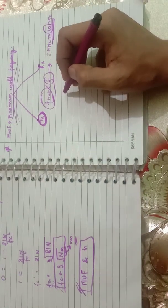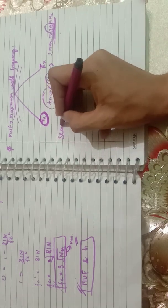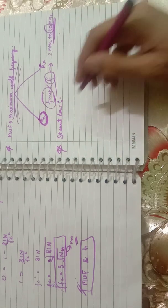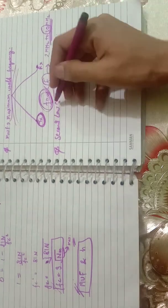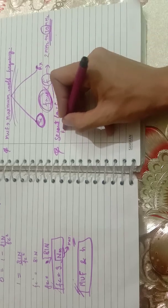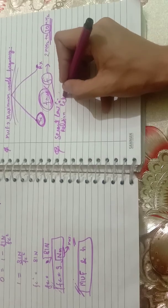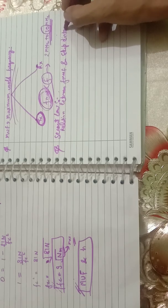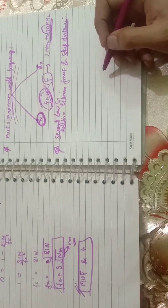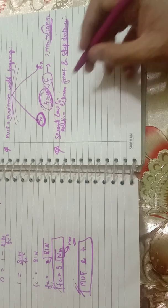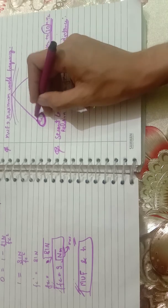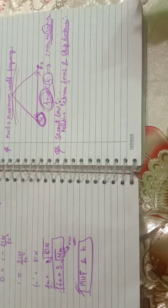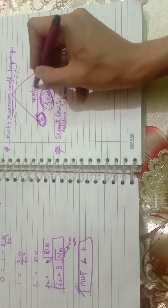Now that we have discussed MUF, we need to understand the second law and later the skip distance and the fMUF derivation. The second law establishes the relation between fMUF, or the maximum frequency, and skip distance. Skip distance is basically the distance between the transmitter and receiver up to which sky wave propagation communication is possible.